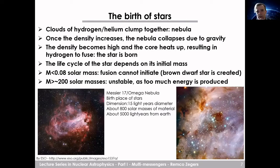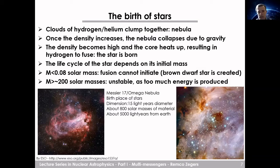So what about the birth of stars? Once you have clouds of hydrogen and helium, they can clump together in a nebula. When the density increases, the nebula can collapse due to gravity, the core heats up, and hydrogen begins to fuse — this is when the star is born. What happens next depends on the initial mass. If the mass is very light, fusion cannot really happen and you create a brown dwarf. If the mass is very high, about 200 solar masses, it becomes unstable. In between, you can make a wide variety of different types of stars.